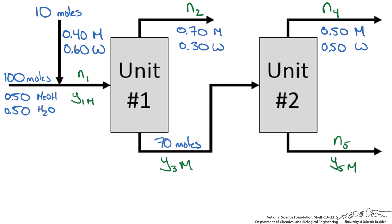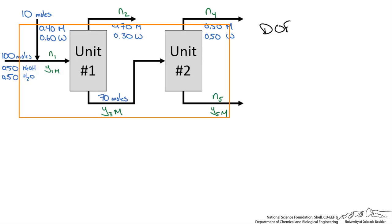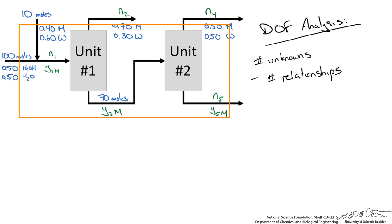The reason we do degree of freedom analysis is that we can quickly pick apart each process unit and determine whether or not we can solve for its variables. We take the number of unknowns and subtract the number of relationships we can write to calculate those unknowns — whatever is left is the number of degrees of freedom. If this is 0 we can solve; if more than 0 we cannot; and if negative, the system is over-specified.